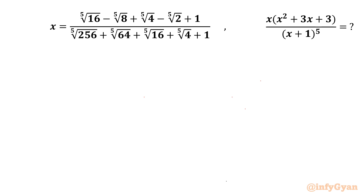Welcome to Infigyan, my dear friends. In today's video we are going to take up another challenging question from Radical Mathematics. We have to evaluate the expression x times (x² + 3x + 3) over (x+1)⁵, once x is given to us. Let us consider x as numerator over denominator, as it is in the form of a rational, and let us call this expression which we have to calculate as e.